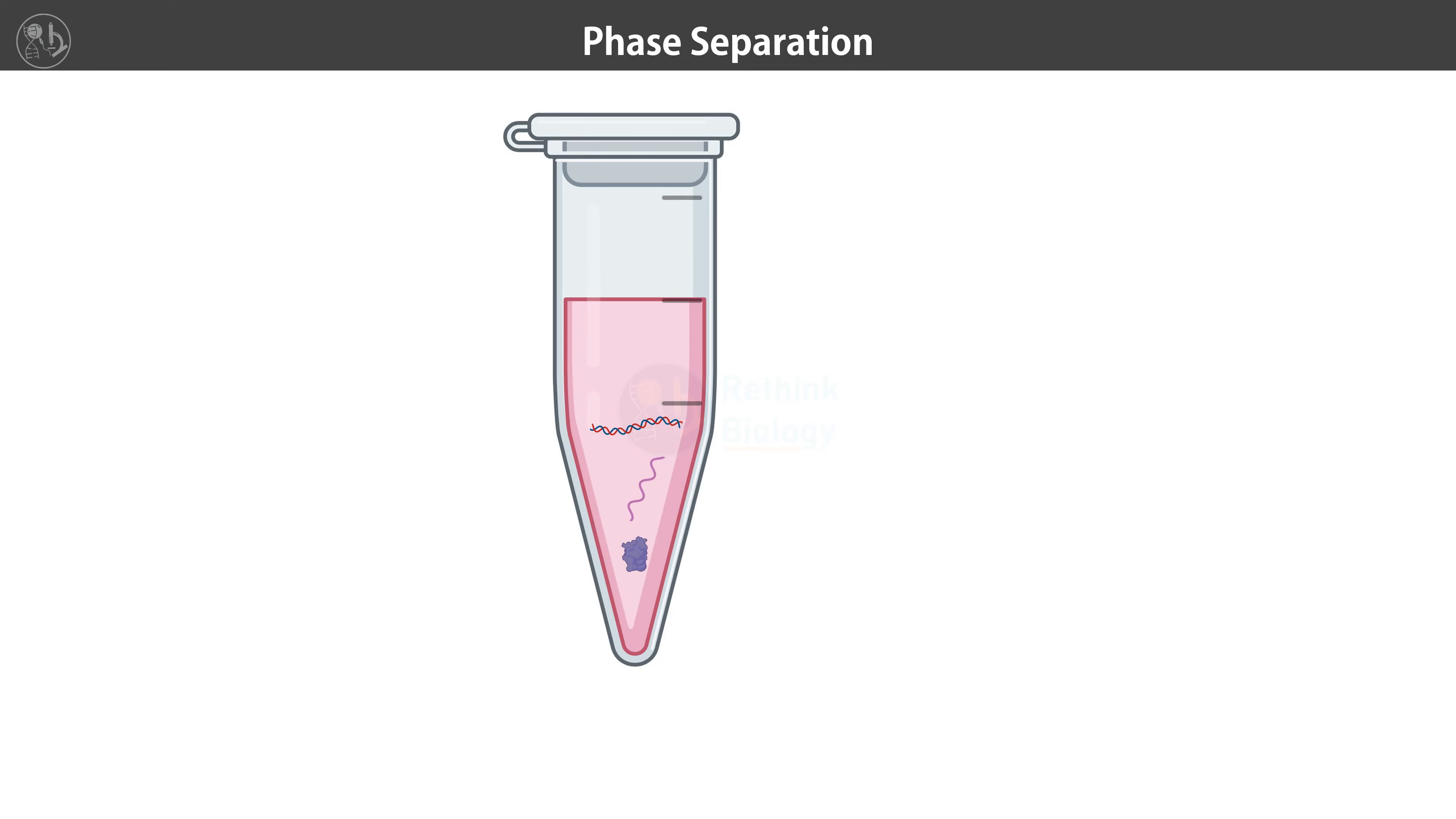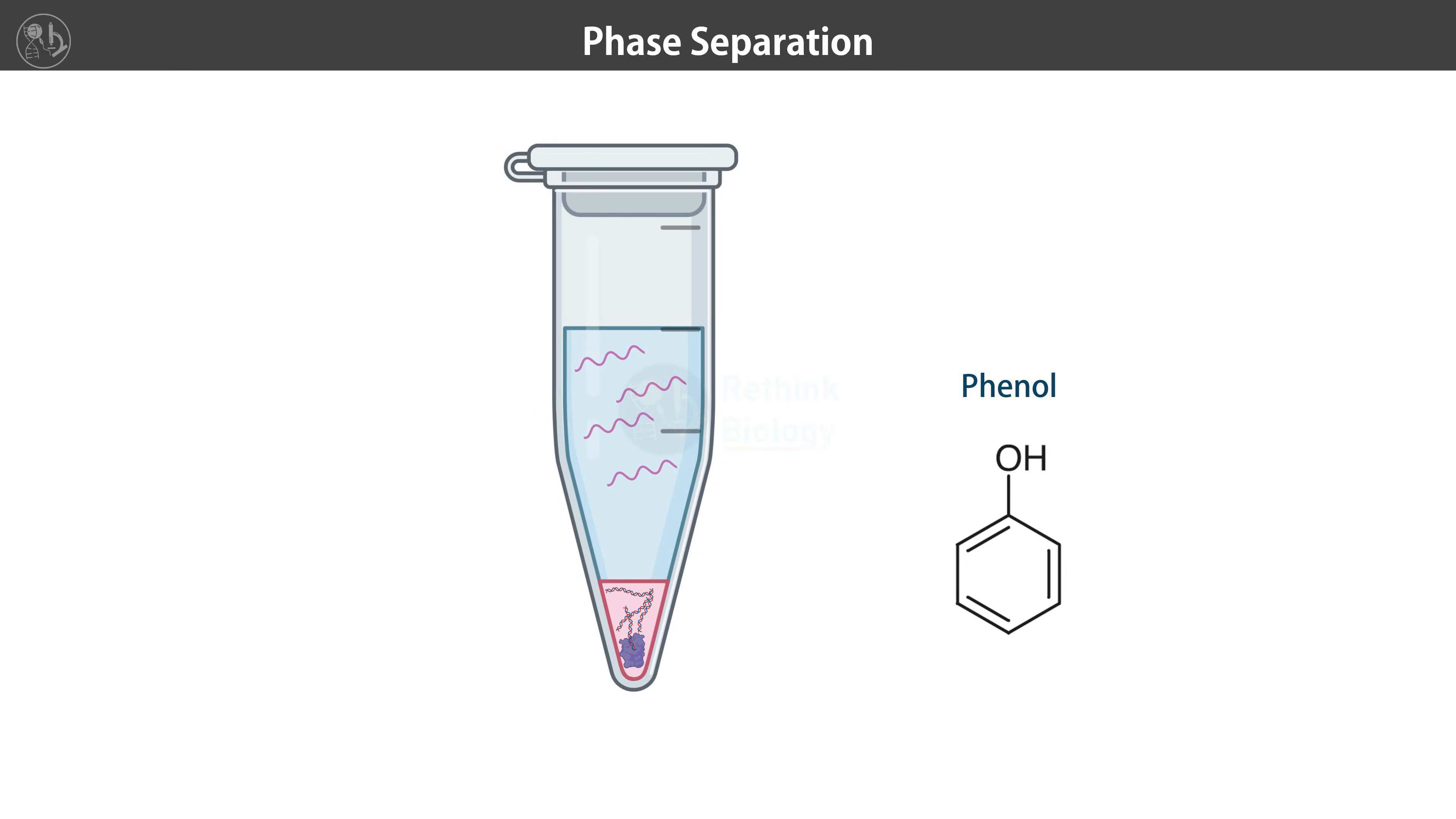Now this mixture with dissolved cellular contents is called cell lysate. Here comes the phenol, which creates separate layers in the cell lysate. The RNA, with its negatively charged phosphate backbone, is attracted to the polar water layer. Proteins and DNA, with more complex structures and hydrophobic regions, are drawn to the final layer.